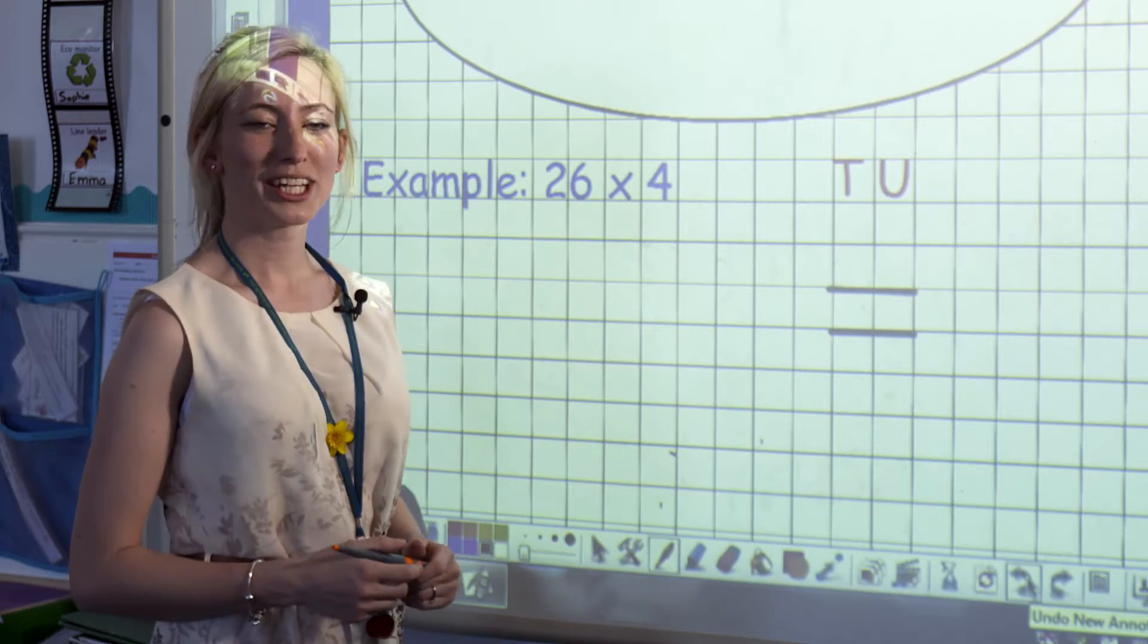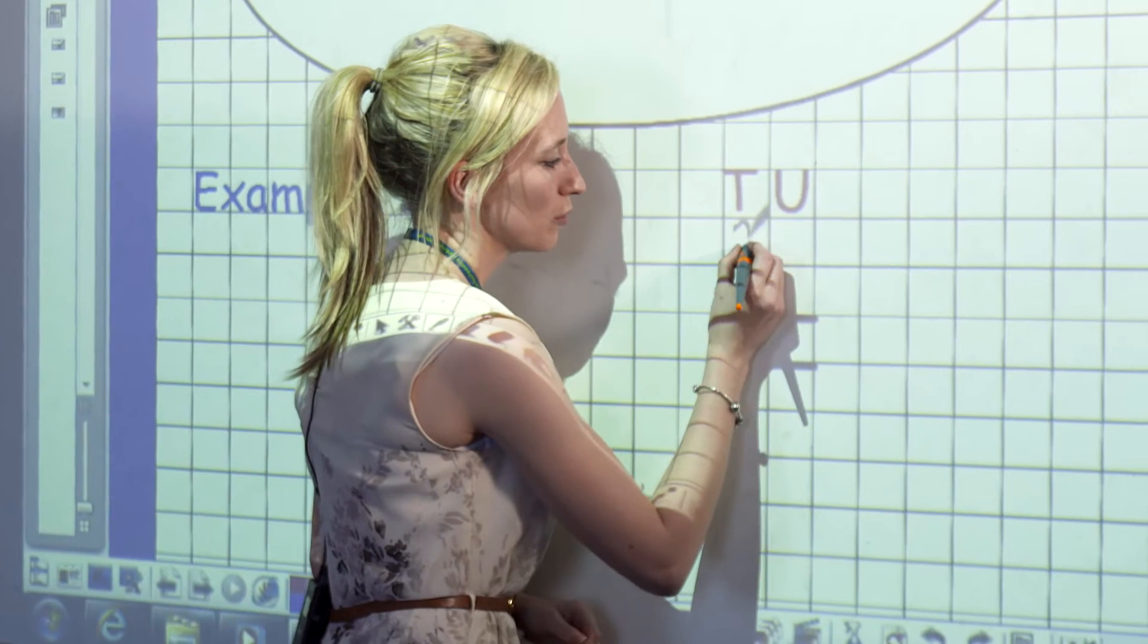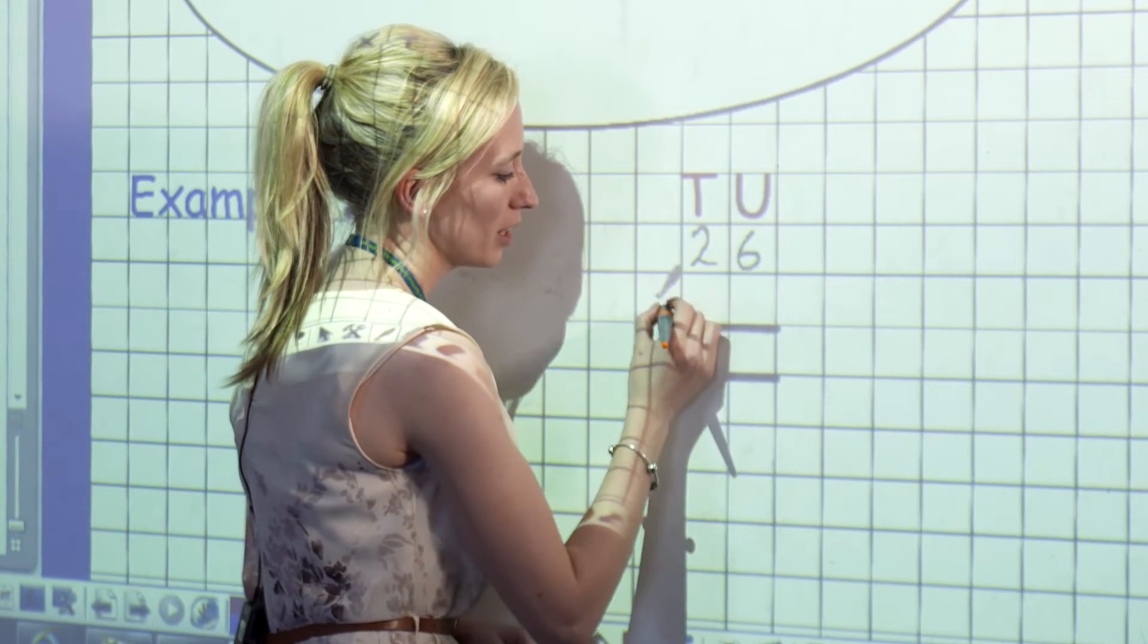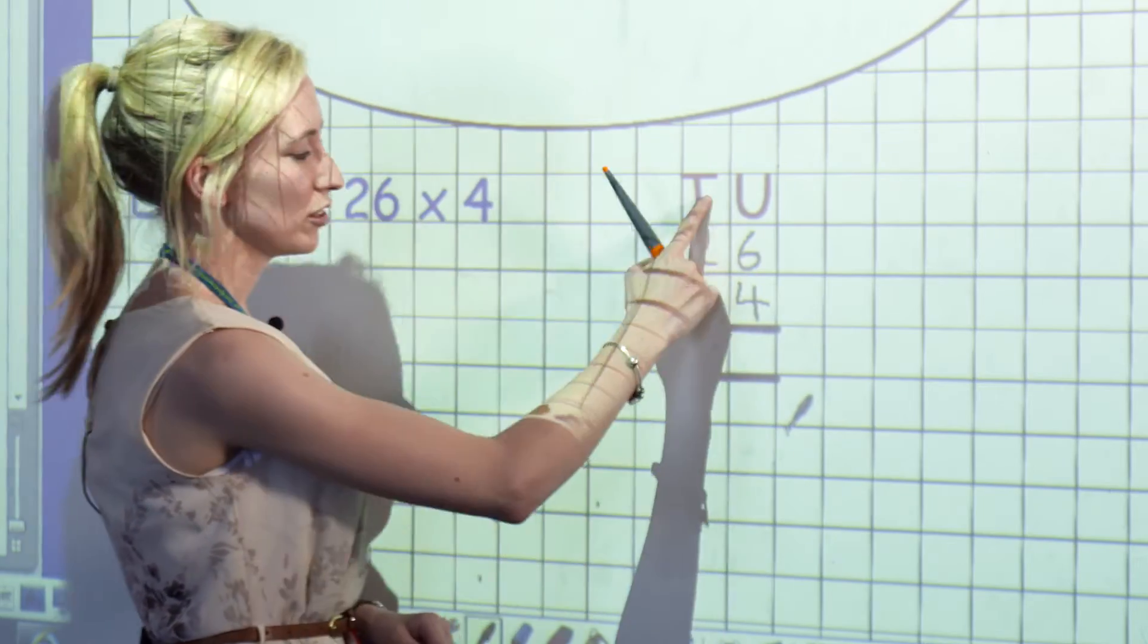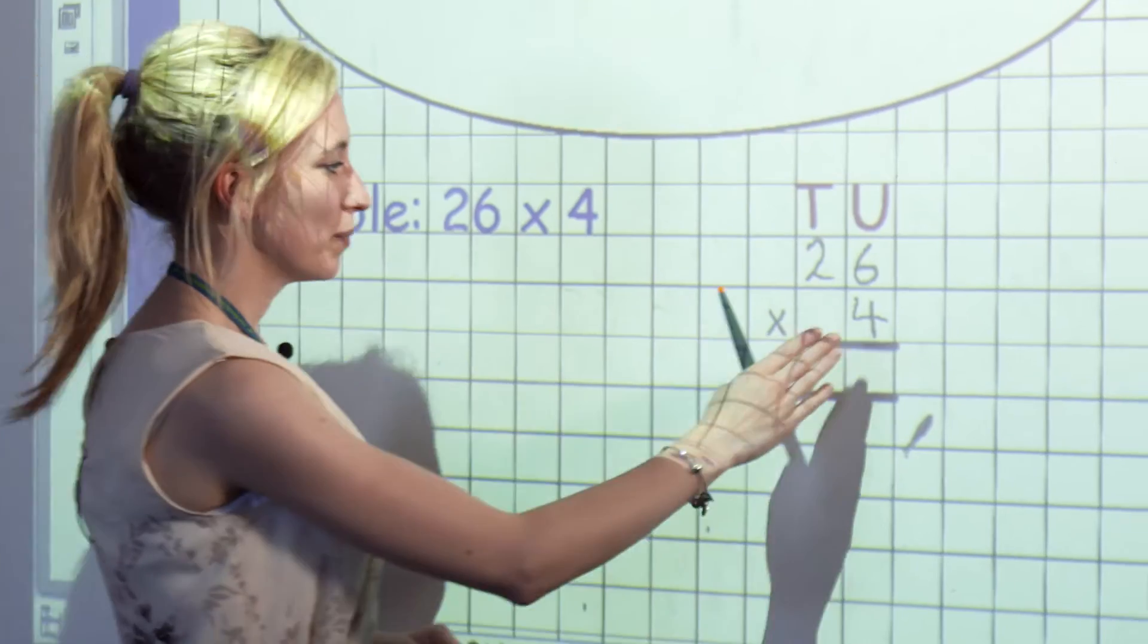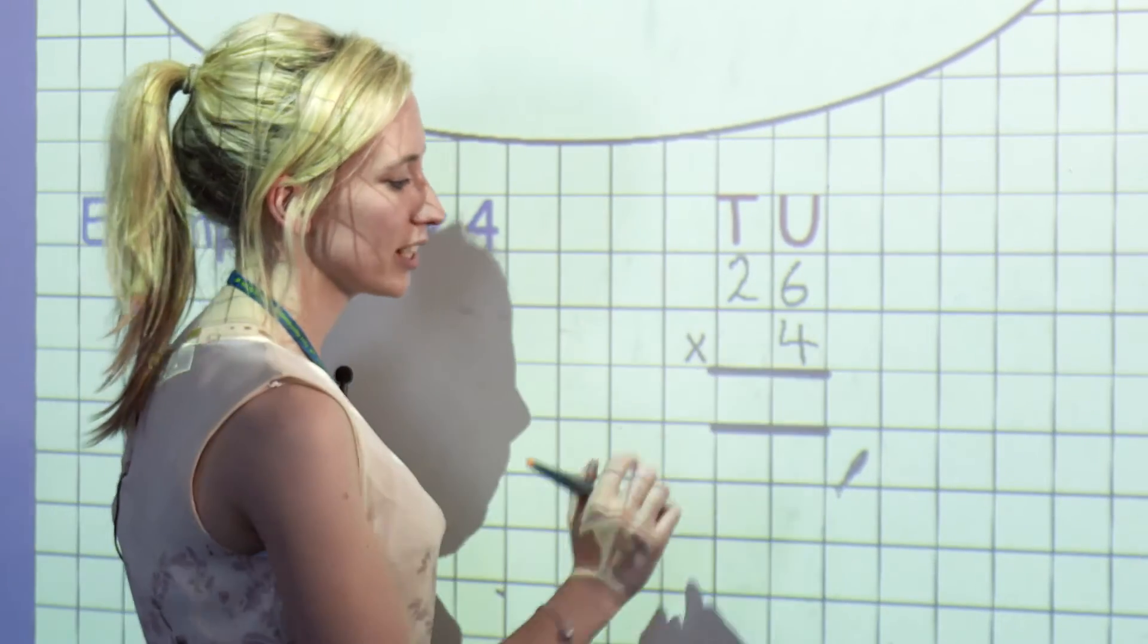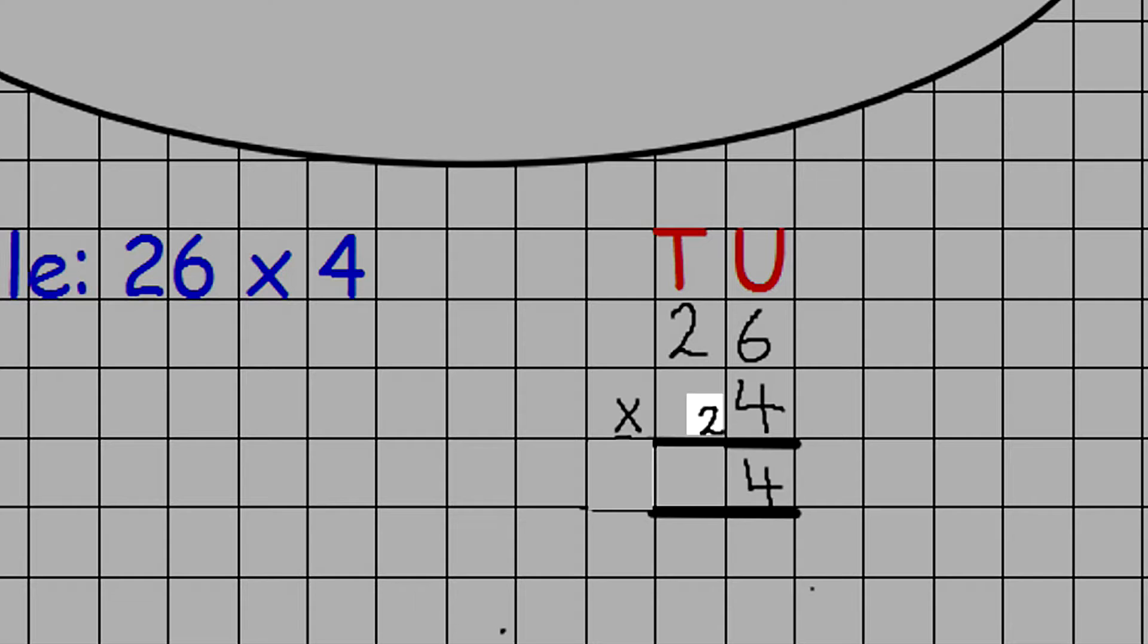Another example of multiplication with carrying would be 26 multiplied by 4. The children will become more confident with aligning their numbers into the columns, ensuring they have their units in the units column, their tens in the tens, and their multiplication sign outwiths. Beginning on the right-hand side, they have 4 times 6 to give them 24, putting down their units and carrying their tens.